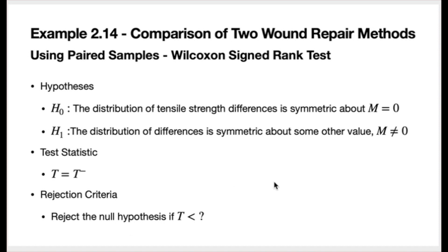Now let's use the Wilcoxon signed rank test. We know it's applicable here because under the conditions of the null hypothesis, the population of differences is symmetrically distributed. The null hypothesis is that the distribution of tensile strength differences is symmetric about a value cap M that is less than or equal to zero. The alternative is that the distribution of differences is symmetric about a value cap M greater than zero. The test statistic is T-minus. Because of the way the table is set up, every test is a left-tailed test.